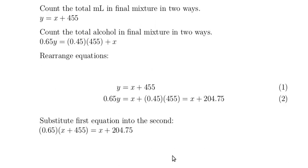One method is not necessarily better than the other, but in this case I chose to take this y, x plus 455, and plug it in where this y is. So 0.65 times that value equals the other side. Now we've just got x's involved, and I need to solve that equation for x.